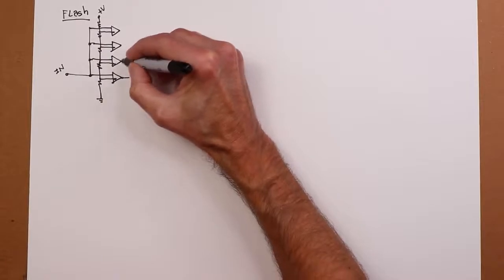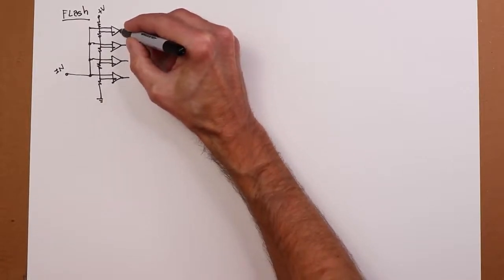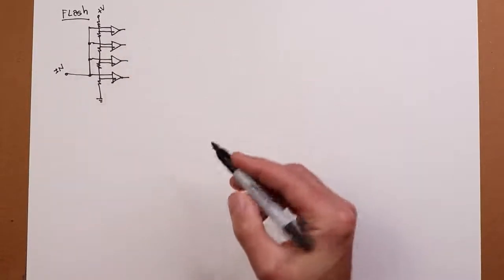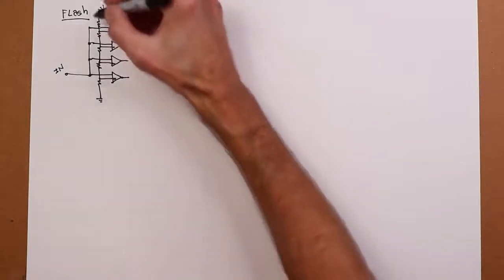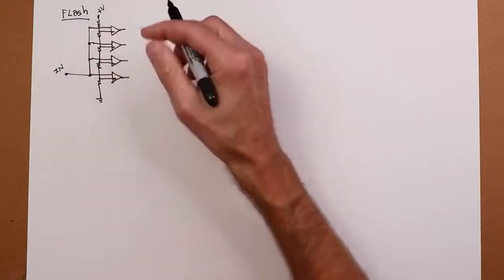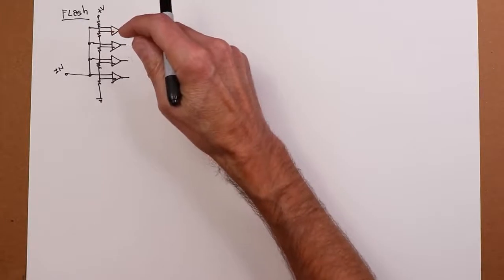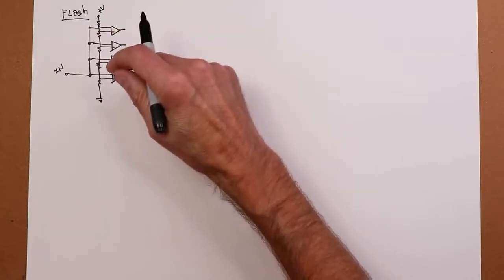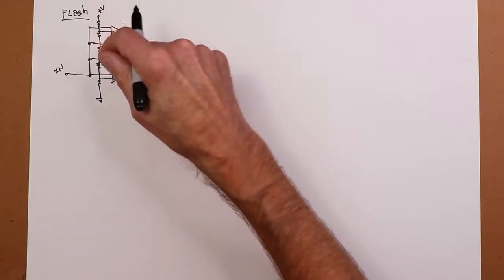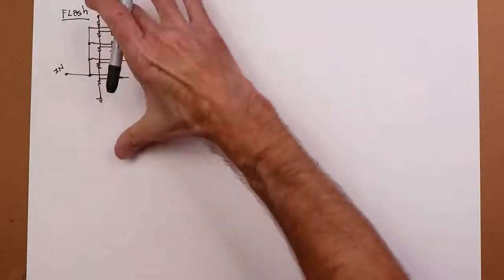Now, what do we have coming out of here? Well, if we were to be very simple about this, and let's say this was one volt, and we had this set up for like a half a volt, three quarters of a volt, a quarter of a volt. And I throw a signal in, and it's a little over half a volt.